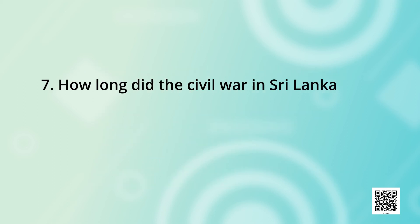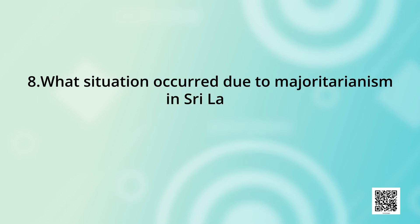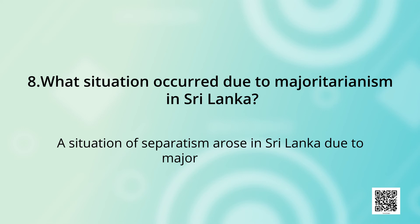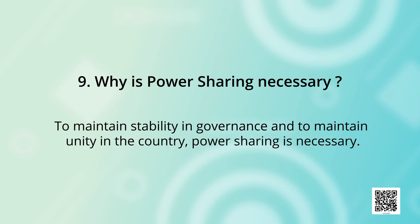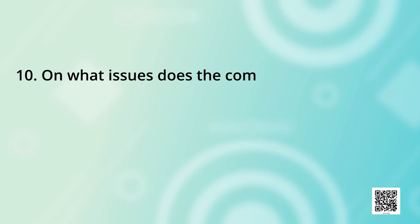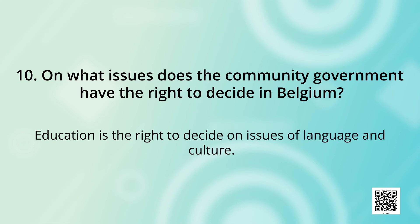Question: How long did the civil war in Sri Lanka last? Answer: The civil war went on from 1993 to 2009. Question: What situation occurred due to Majoritarianism in Sri Lanka? Answer: A situation of separatism arose in Sri Lanka due to it. Question: Why is power sharing necessary? Answer: To maintain stability in governance and unity in the country, power sharing is necessary. Question: On what issues does the community government have the right to decide in Belgium? Answer: Education, language, and culture.